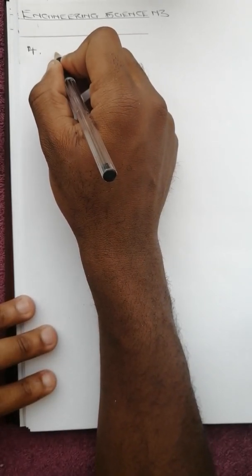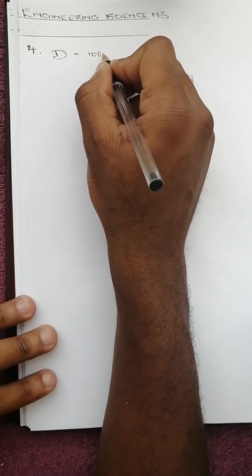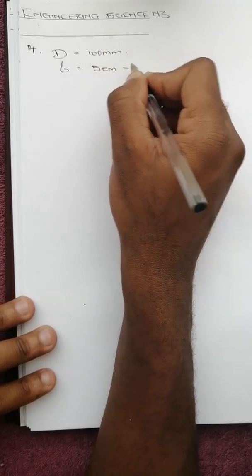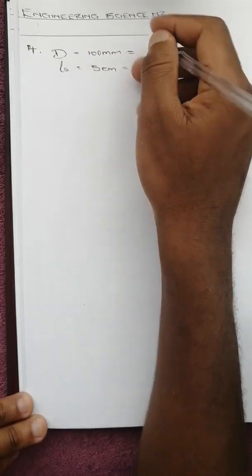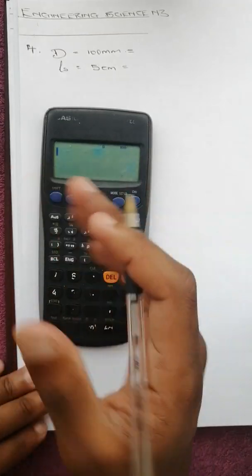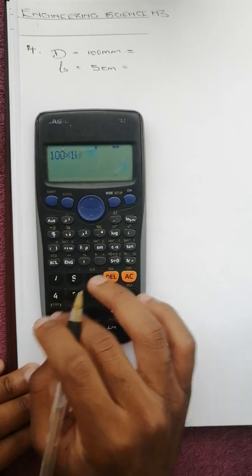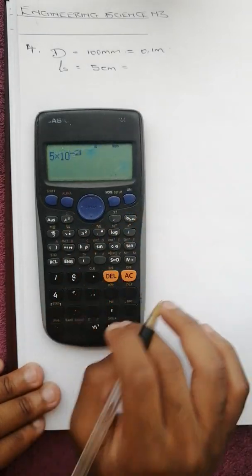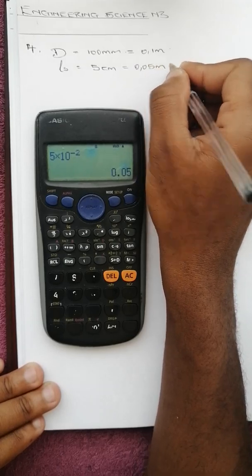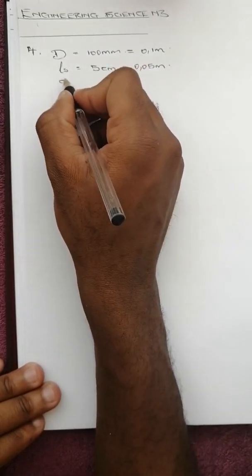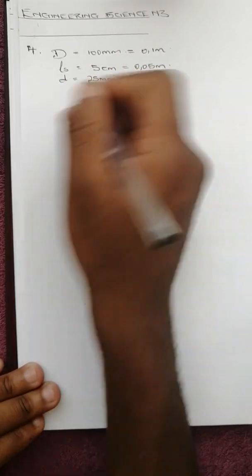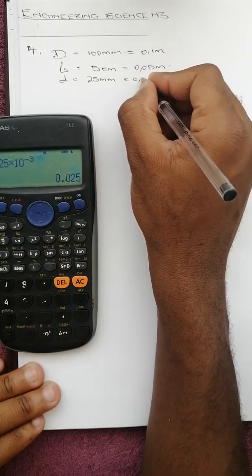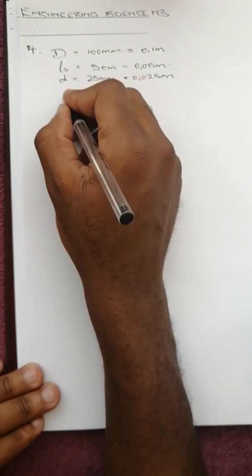For the fourth question, we are given the rim diameter which is big D equals 100mm, the plunger stroke length ls equals 5 centimeters which is 0.05 meters, and the plunger diameter is 25 millimeters which is 0.025 meters. We are told to calculate the number of strokes.